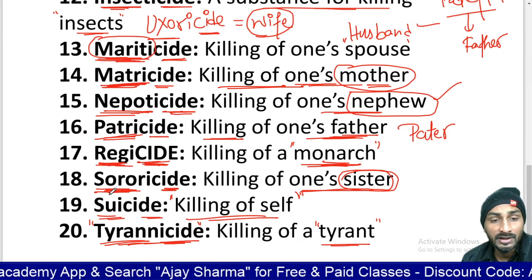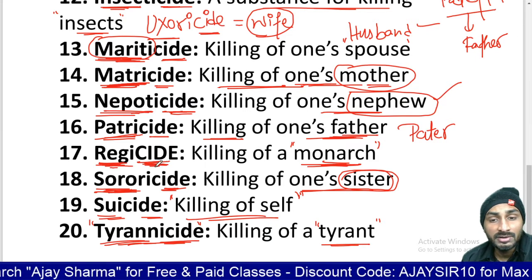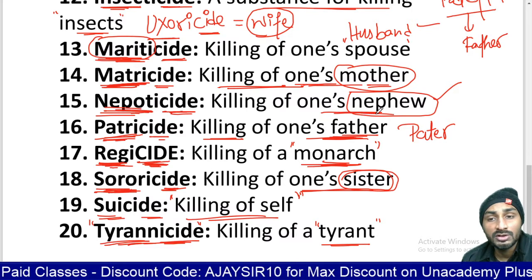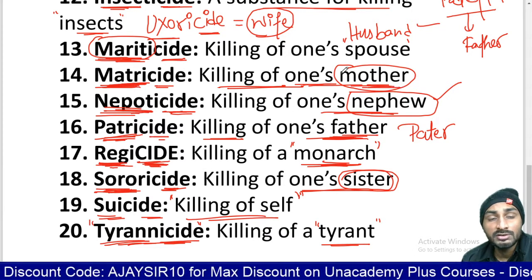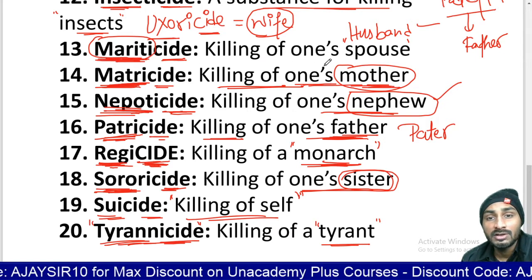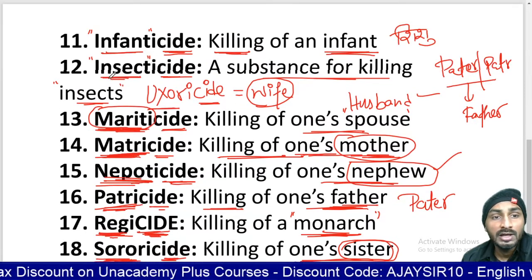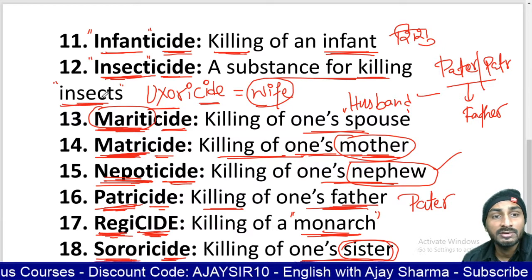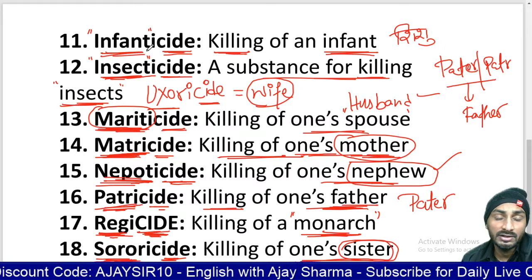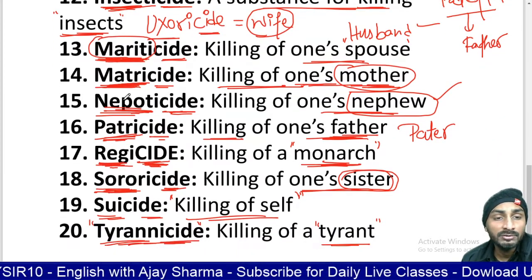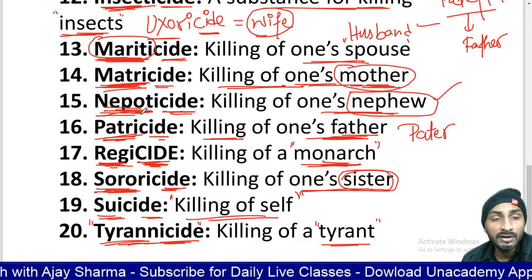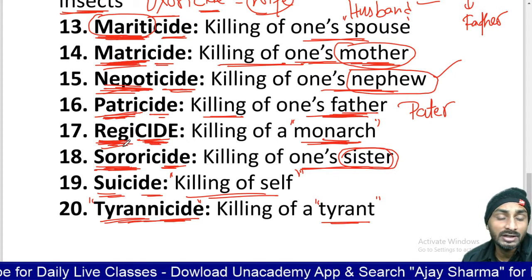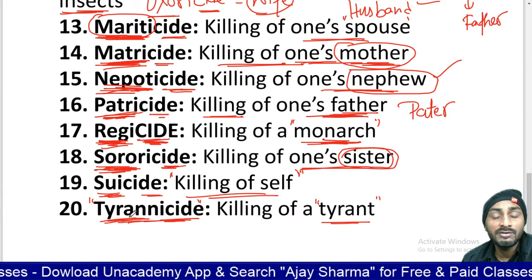Let's recap: suicide means killing of self; sororicide means killing of sister; regicide means killing of monarch; patricide means killing of one's father; nepoticide means killing of one's nephew; matricide means killing of one's mother; mariticide means killing of one's spouse. Insecticide means killing of insects; infanticide means killing of infant. Roots: 'mariti' for husband, 'matri' for mother, 'nepoti' for nephew, 'patri' for father, 'regi' for monarch, 'soror' for sister, 'sui' for self, 'tyranni' for tyrant.